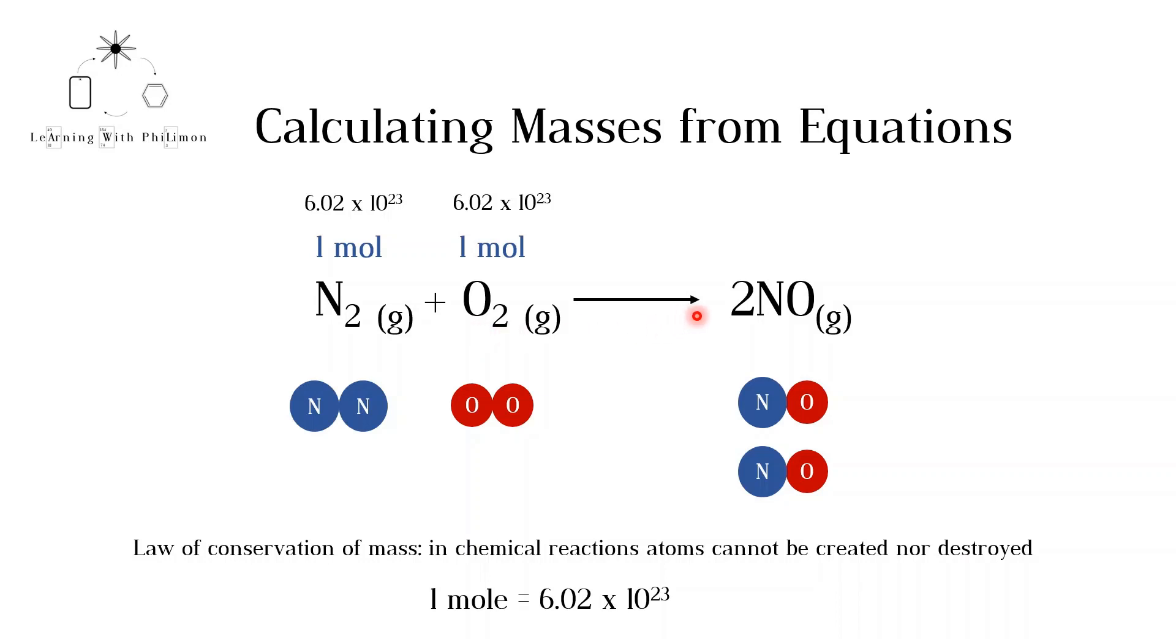The coefficient of 2 in front of nitrogen monoxide tells us that for every nitrogen molecule or oxygen molecule that reacts, 2 nitrogen monoxide molecules are formed. There is a ratio of 1 to 2. If all the molecules react, you must make 2 moles, or 12.04 times 10 to the 23 nitrogen monoxide molecules.